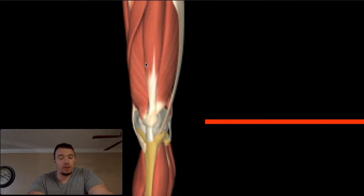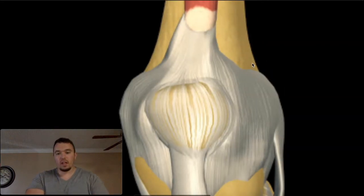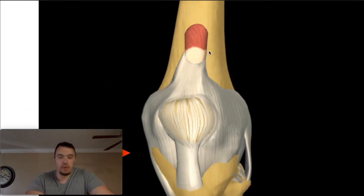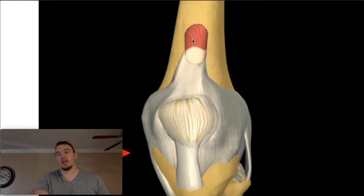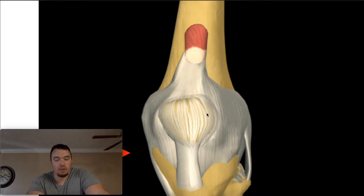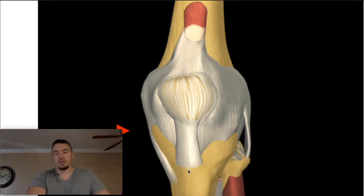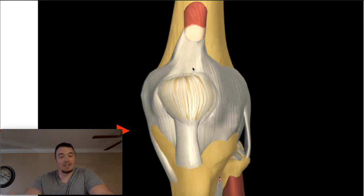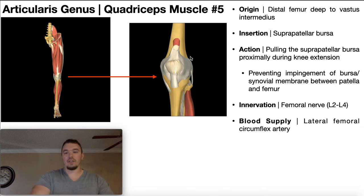Now if we strip away rectus femoris, vastus lateralis, vastus medialis, and even the underlying vastus intermedius, we're left with just one small muscle — articularis genus. It is very small because it's not going to be moving a bone; we're not moving the tibia with this muscle. Notice that articularis genus does not attach on the patellar tendon, so it cannot extend the knee and cannot participate in that function at all. So that begs the question: what is the function of articularis genus?